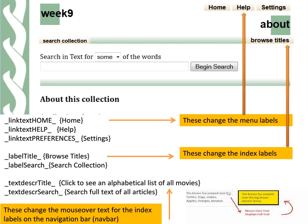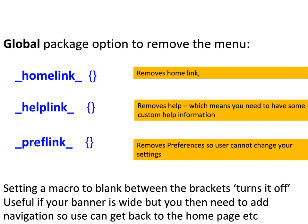In package global we've changed what's on the top right menu, changed our navigation bar menu labels, and added some mouse over text for navigation bar menu items to give a bit more explanation. Another option is to not just change the text in that top right menu but to turn it off completely — this will be of interest to those who have very large banners. We go back to the global package and set the home link, help link, and preferences link brackets to nothing so they won't display. If someone needs to get to those, we may have to provide some menu options somewhere else.